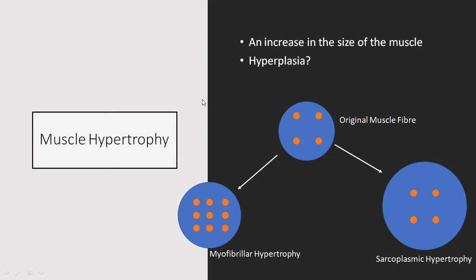First we need to understand what muscle hypertrophy is. Essentially we're talking about an increase in the size of a muscle — in this case skeletal muscle — and we can have two theorized forms of hypertrophy, and potentially three, which we'll talk about.